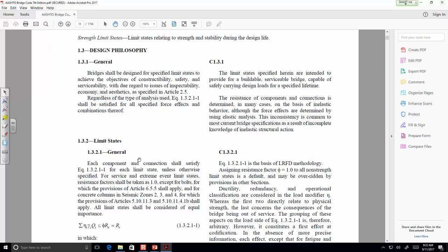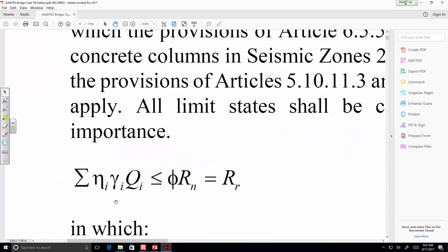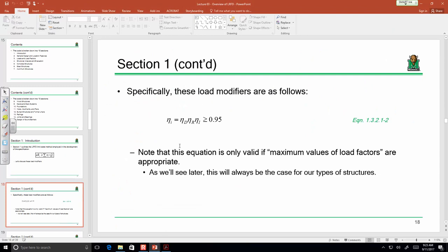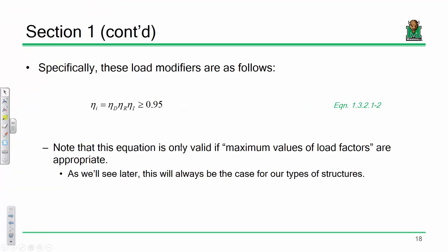Now, our limit states this should be a very familiar equation, right? Phi-RN needs to be greater than or equal to 100 loads. The one thing that's a little new is this term right here, okay? This little eta sub i, okay? Everybody see that? We never talked about that, and I never talked about it past this, and here's why. Okay. Let's talk about these load modifiers. These eta terms are load modifiers, okay? And they're the product of three individual terms. A modifier that relates to ductility, a modifier that relates to redundancy, and a modifier that relates to operational importance, okay? And let me explain what those mean.